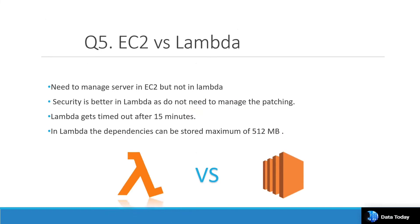A very important interview question: what is the difference between EC2 and Lambda? Lambda is serverless computing while EC2 is managed computing — once you create an instance you need to manage it for security, patch updates, and installations. In Lambda, all things are managed by AWS. Security is better in Lambda because it is managed by AWS itself.